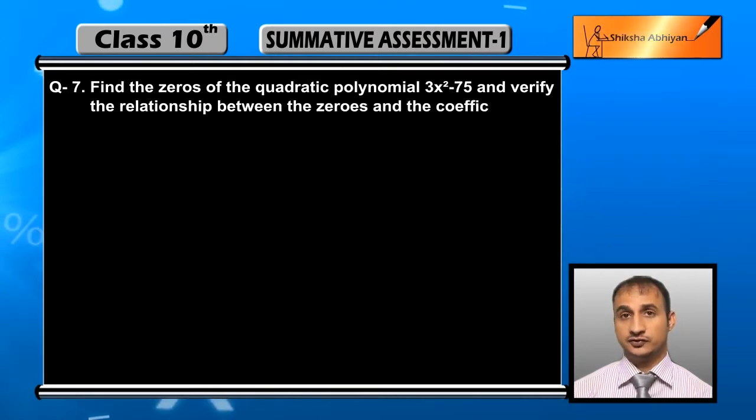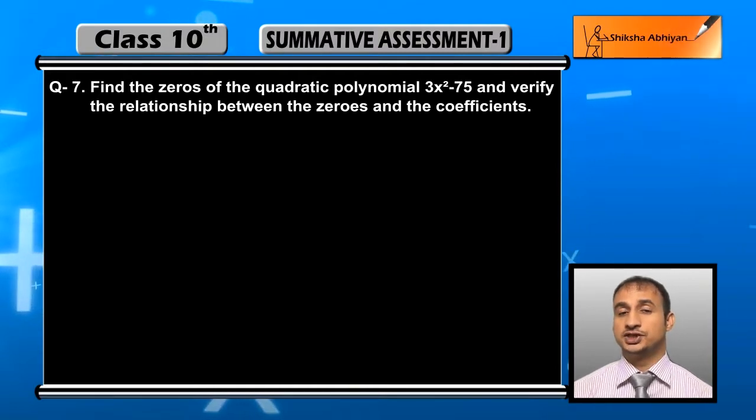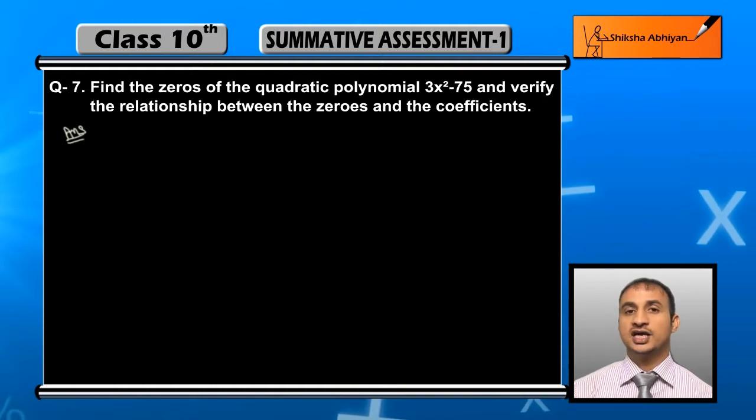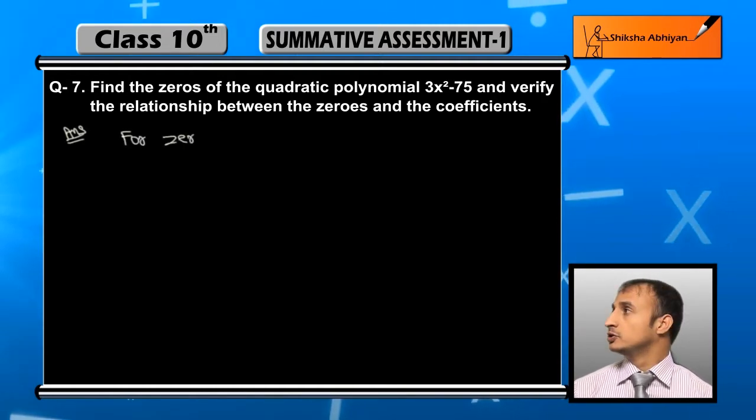We need to find the zeros of the given polynomial and then verify the relationship with the coefficients. For zeros, we will equate the given polynomial to zero. So for zeros, put the polynomial equal to zero.